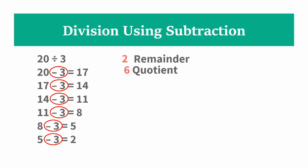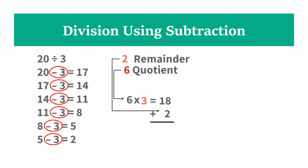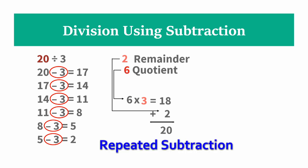Now, how do we check if it's correct? We will multiply the quotient with the divisor: 6 multiplied by 3 is 18. Then we add the remainder to the result: 18 plus 2 is 20, which is the original value. That's how you perform division using repeated subtraction.